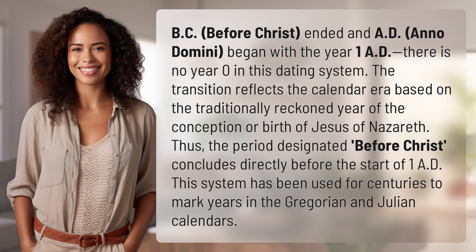The transition reflects the calendar era based on the traditionally reckoned year of the conception or birth of Jesus of Nazareth. Thus, the period designated before Christ concludes directly before the start of 1 AD. This system has been used for centuries to mark years in the Gregorian and Julian calendars.